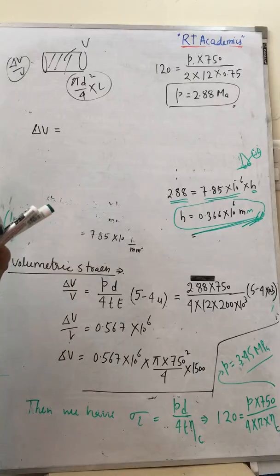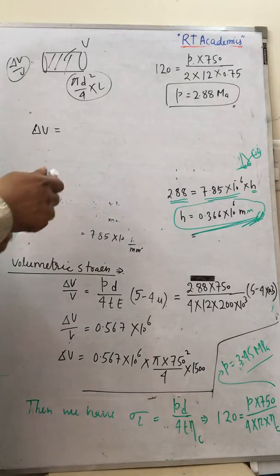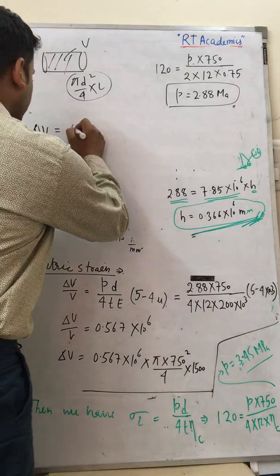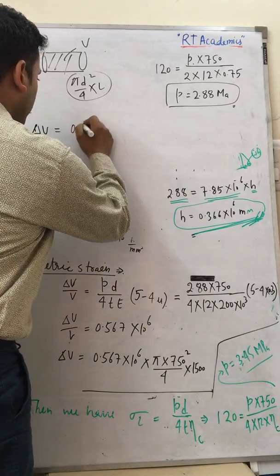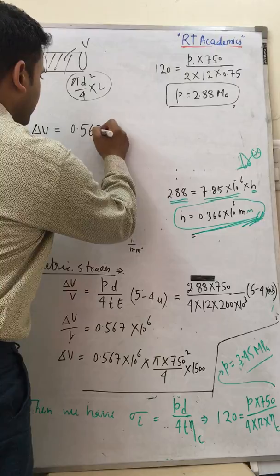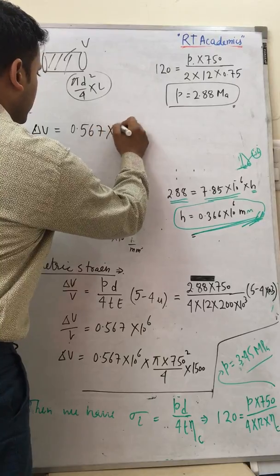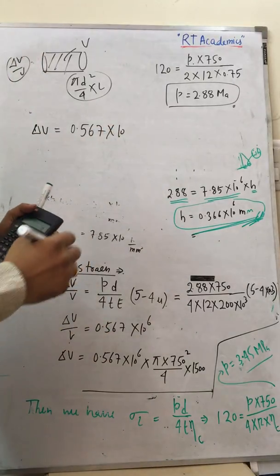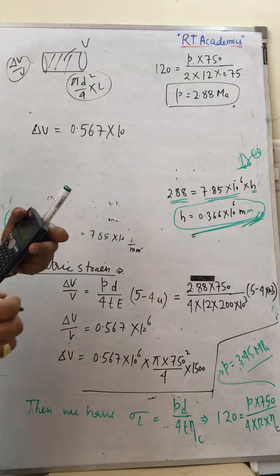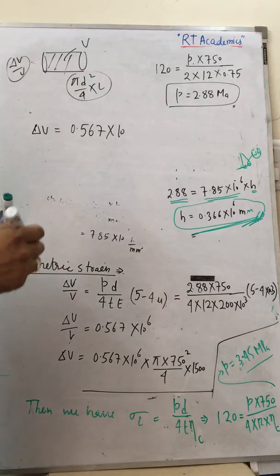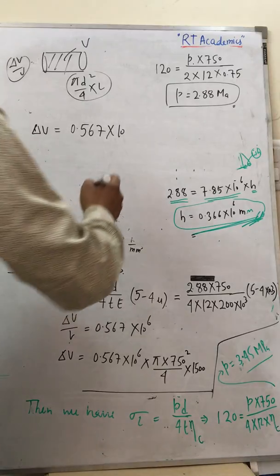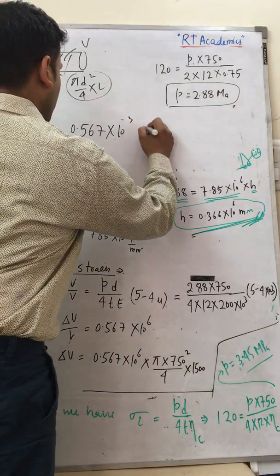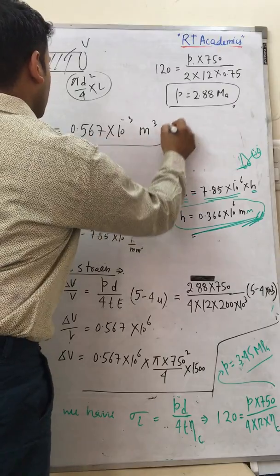After substitution, ΔV equals 0.567 × 10⁻³ meter cubed.